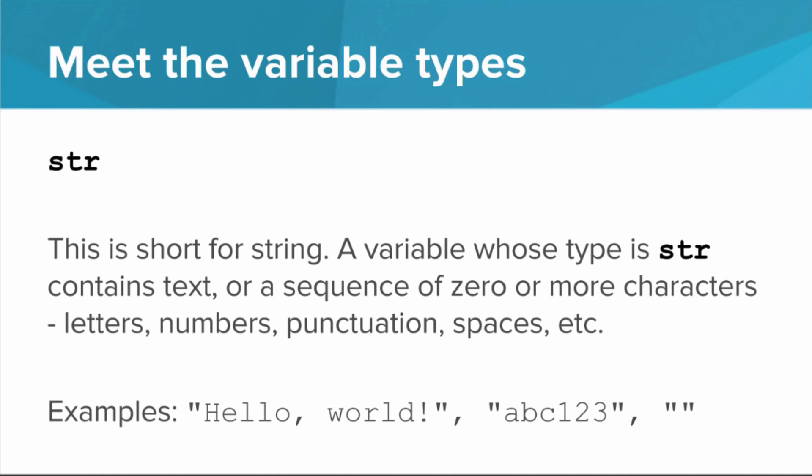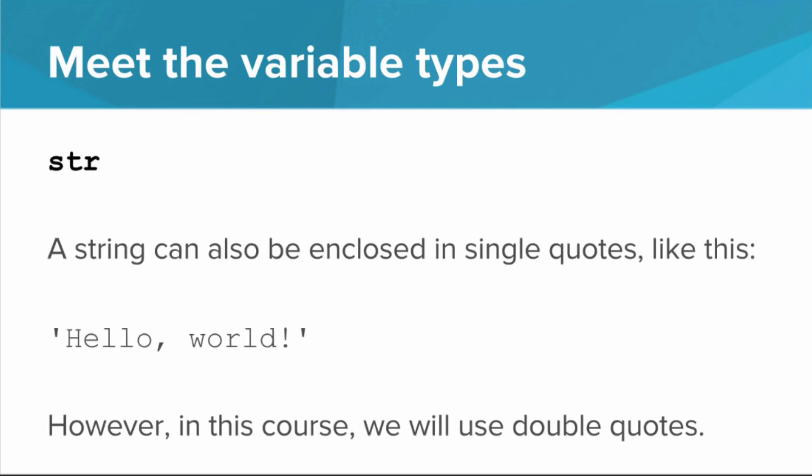abc123 is an example, or a string can actually have zero characters. Quick digression: strings can also be surrounded by single quotes in Python. However, in this course, we will use double quotes.